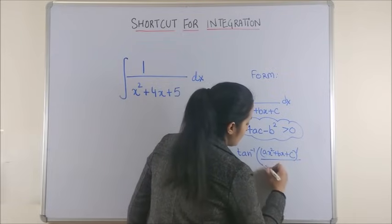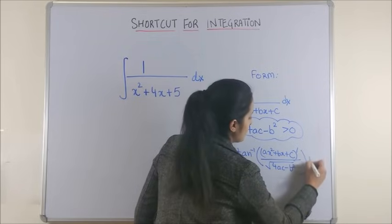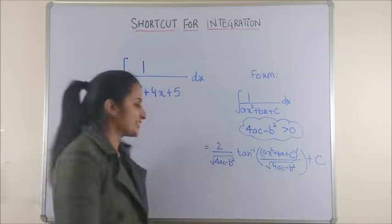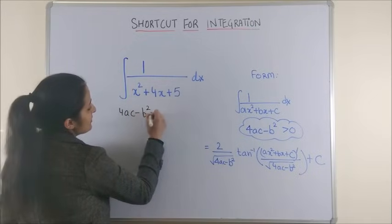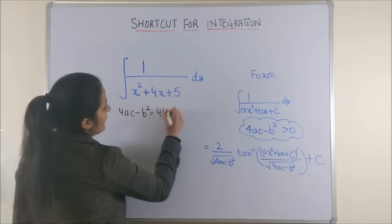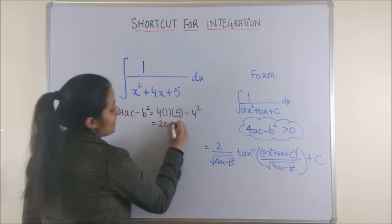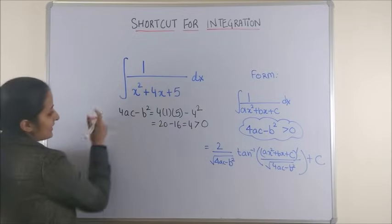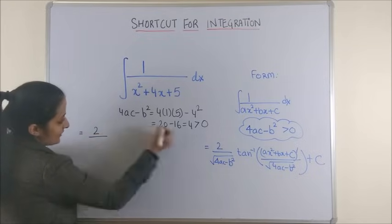Let's apply this trick to the given question. You can mentally also try this: 4ac minus b square is simply 4 into 1 into 5 minus 4 square, which is 20 minus 16, that's 4. Of course it is positive. Then your integral becomes twice of this square root of 4 into tan inverse of derivative of this which would become 2x plus 4 upon square root of 4 plus c.